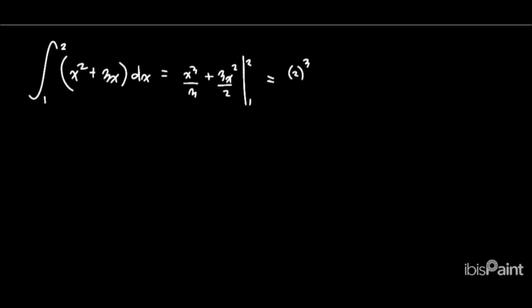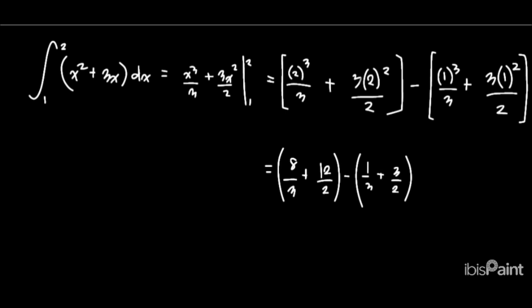Substituting the limits and calculating F(b) minus F(a), we subtract two quantities. And through performing the arithmetic, this gives us a final answer of 41/6.